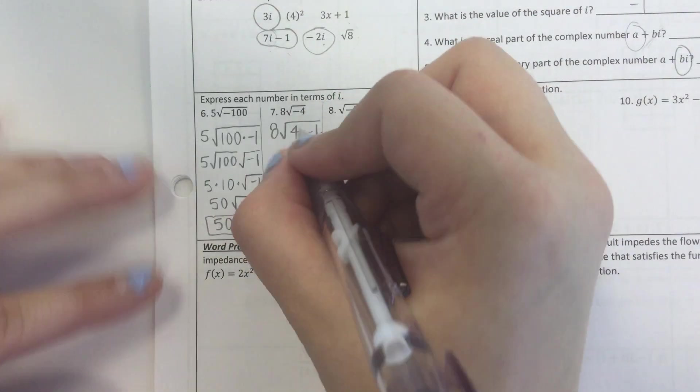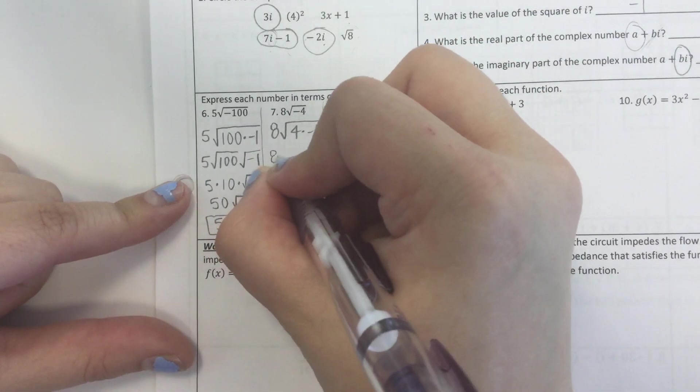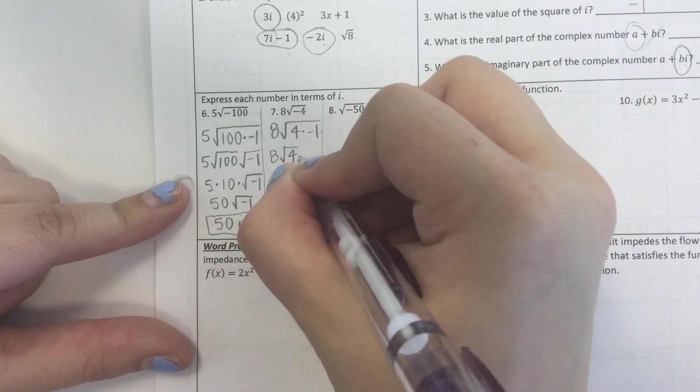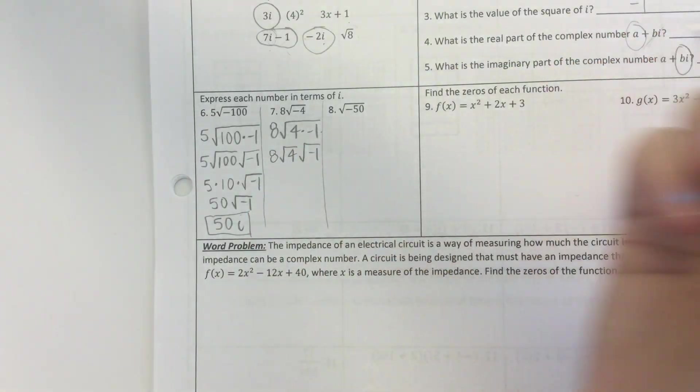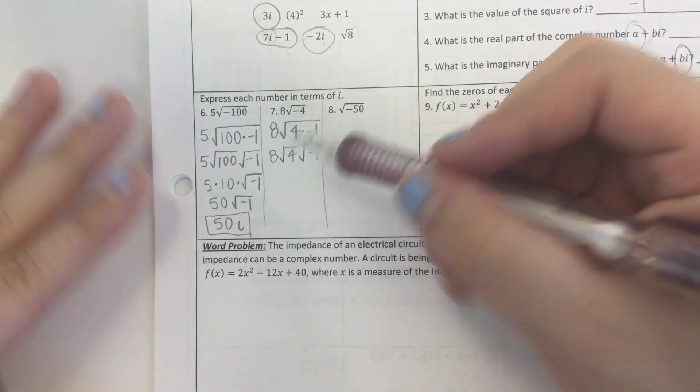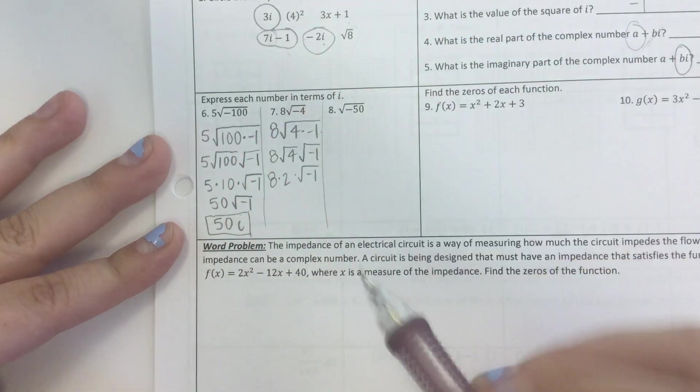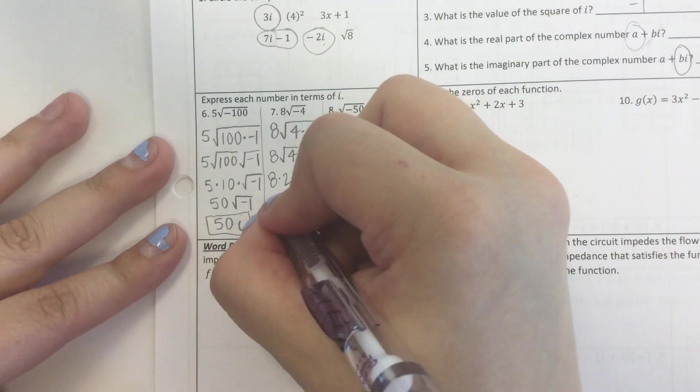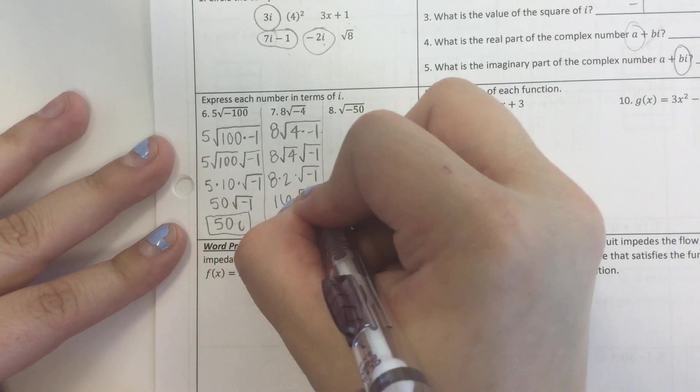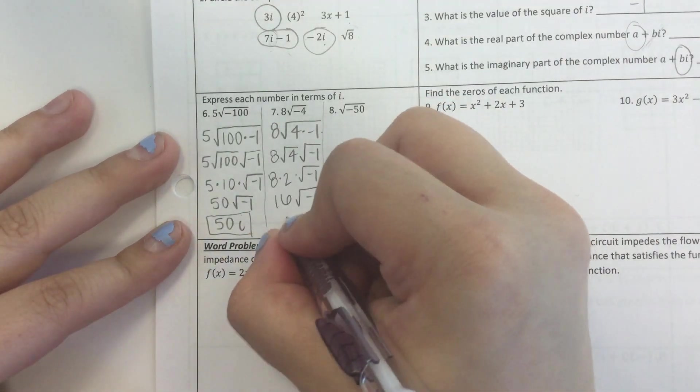Okay, let's keep going. I know that this is the product of two square roots. Okay, the square root of 4 is 2. 8 times 2 is 16, square root of negative 1 is just i.